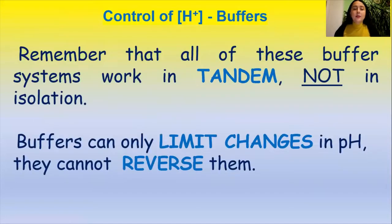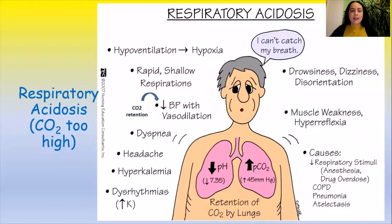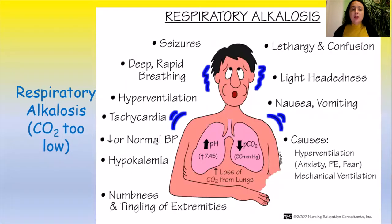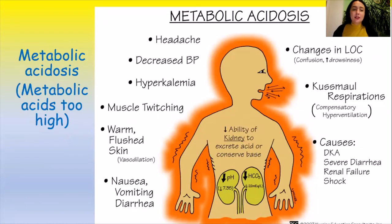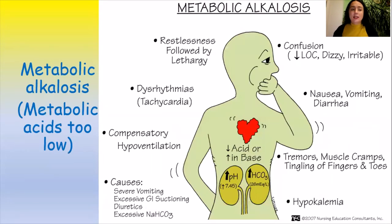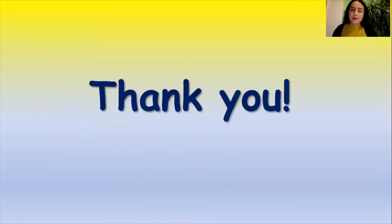We need to remember that all of these buffer systems work in tandem, not in isolation. Buffers can only limit changes in pH but they cannot reverse them. Under some conditions, the chemical buffer system in our body is not able to cope with pH changes. This can be because of respiratory system failure or metabolic problems. This results in dangerous diseases such as respiratory acidosis when CO₂ concentration is too high, respiratory alkalosis if CO₂ concentration is too low, metabolic acidosis if metabolic acid concentration is too high, and metabolic alkalosis if metabolic acid is too low. Thank you for your attention.